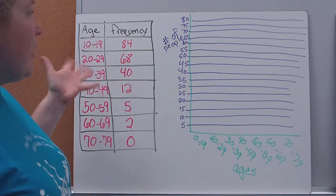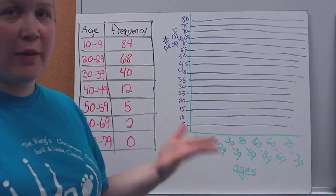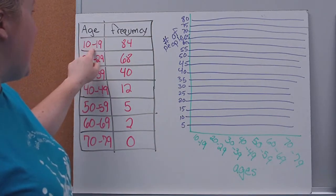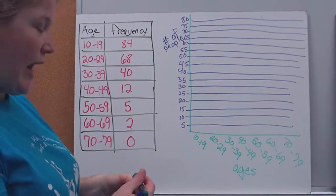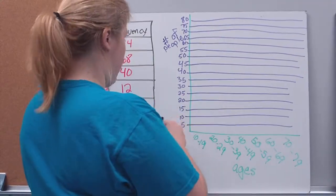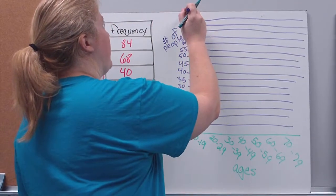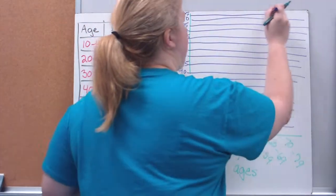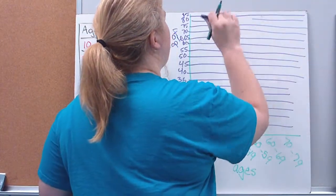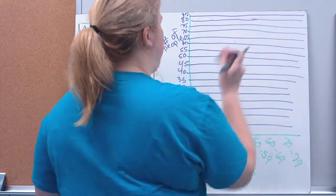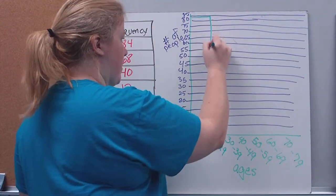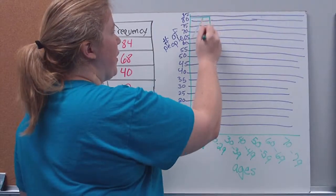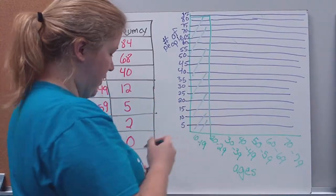So then again, we're just looking and we're going to draw our bars in like we would on a bar graph. So in my age range of 10 to 19, which is my first bar, there were 84 of them. So I'm going to come up here to, oh, I guess it would have helped if I had put 85 up here. Sorry, my lines are really not straight. So I'm going to come up to 84, make my first bar, and shade it in.